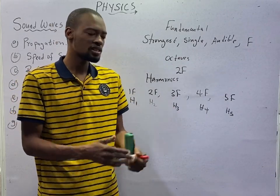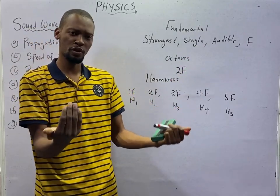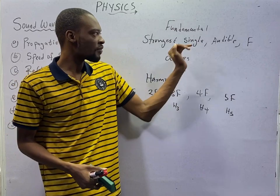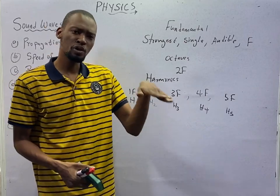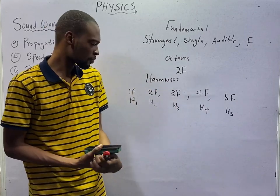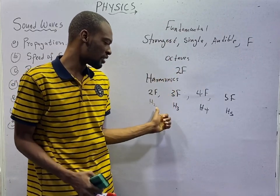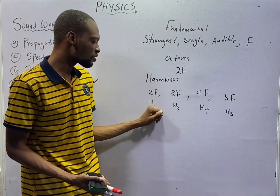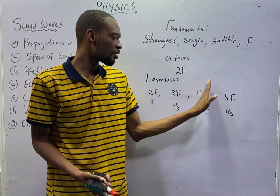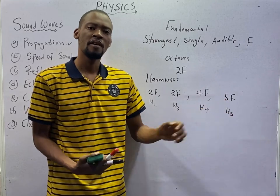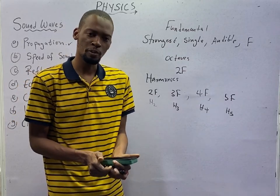Don't forget, fundamental frequency is the sound of a single frequency — the strongest, audible frequency. If you say twice the fundamental frequency, you get octaves. Now, looking at various multiples: this is the fundamental frequency itself, F. When you start the multiples — two times the fundamental frequency — that is the second harmonic. Three times the fundamental frequency is the third harmonic. Four times is the fourth harmonic. Five times is the fifth harmonic. Six times the fundamental frequency is the sixth harmonic, and so on.